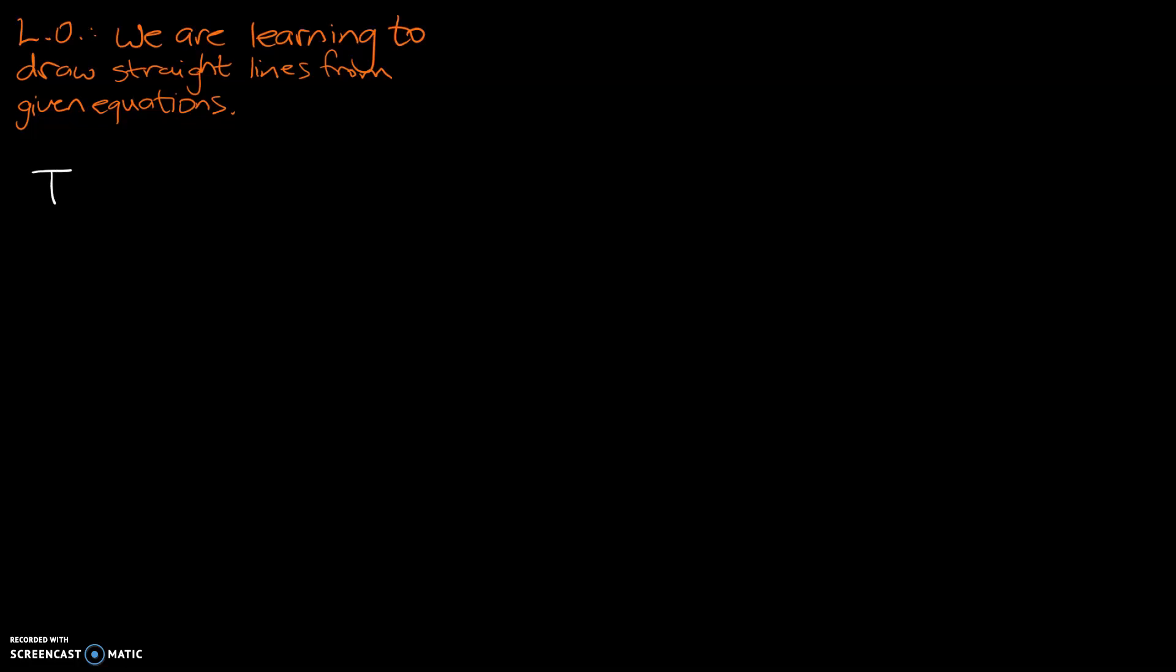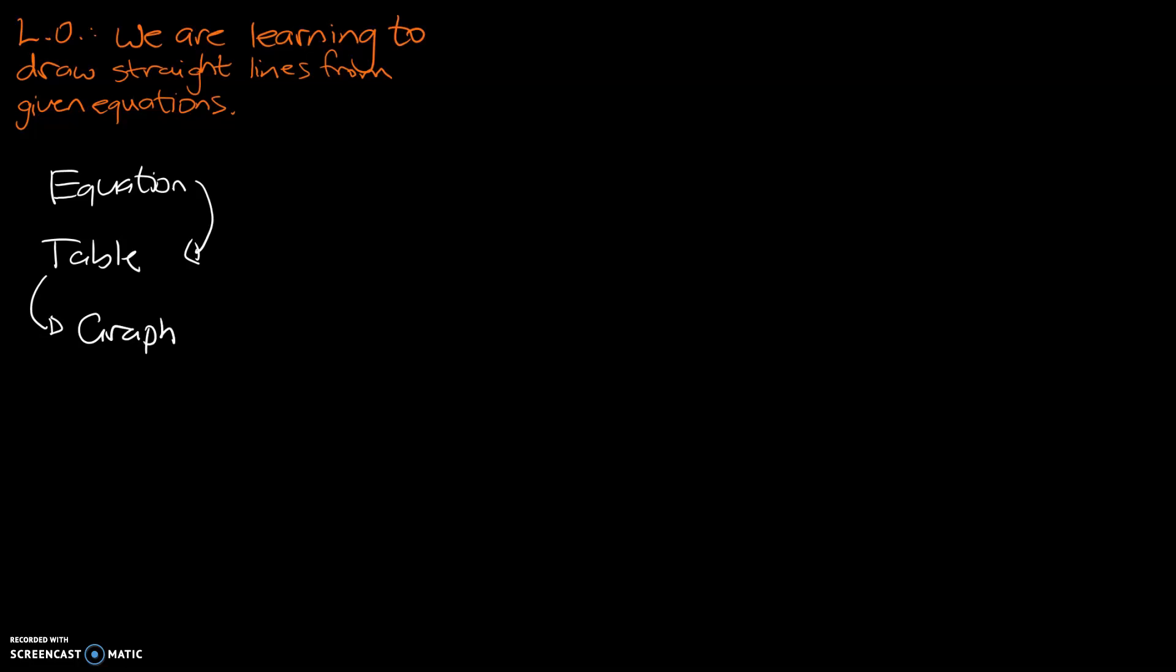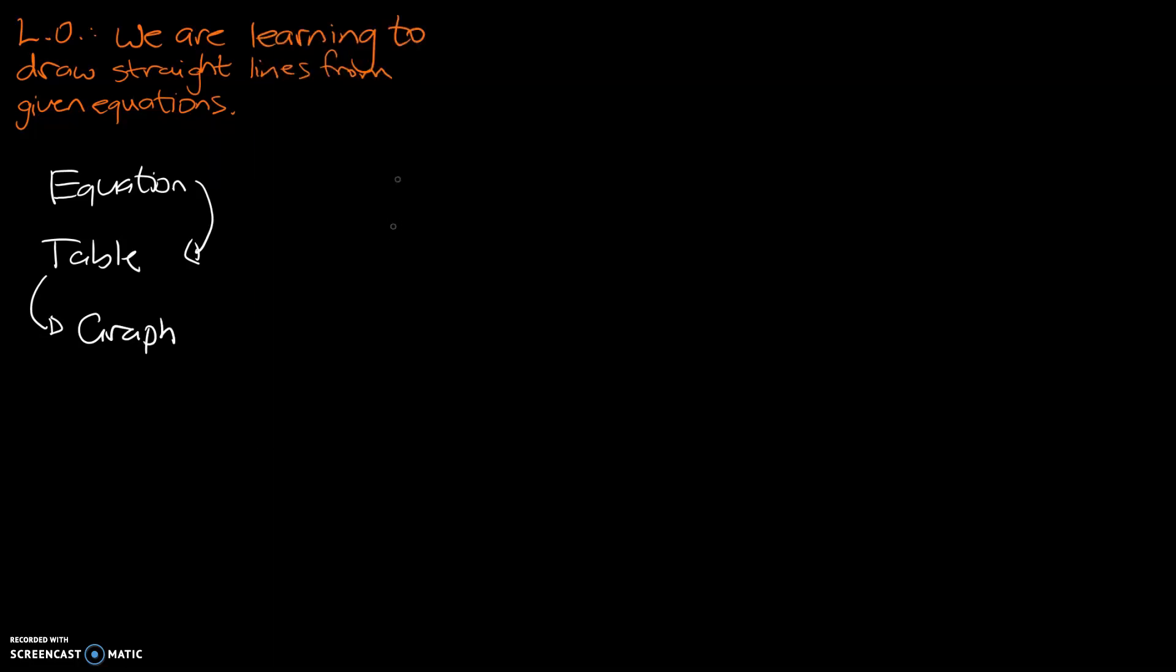In our earlier video, we learnt how to go from an equation to a table, and then how to plot that table and the coordinates it gives to a graph. Today, what we're aiming to do is go straight from the equation to the graph, skipping that table part of the process.